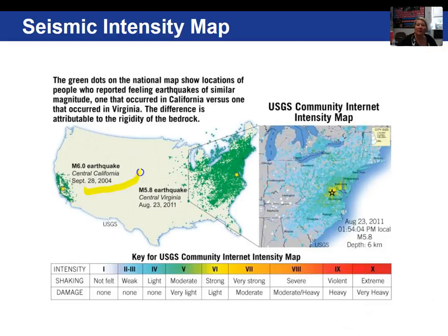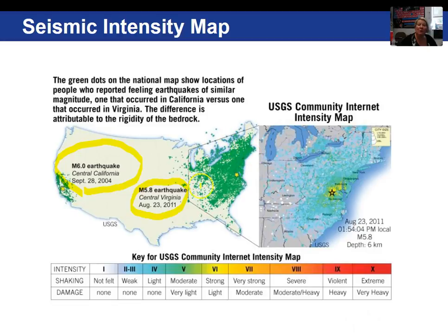Here I'm going to look at a magnitude 6 earthquake in central California versus a 5.0 magnitude earthquake in Virginia. What I want you to observe is the number of people who reported feeling the earthquake. Although the Virginia quake was slightly smaller than the California quake, it was felt by many more people. The reason is that the rock east of the Rockies is older, colder, and behaves in a more rigid fashion, so seismic waves do not get attenuated — they don't diminish as quickly as when traveling through warmer rock, which is the case on the west coast.